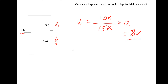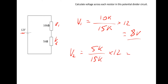For voltage two, we do the same thing: 5,000 divided by the total of 15,000, times the supply voltage of 12. That gives us the other 4 volts. This makes sense because 8 and 4 add together to give the 12-volt supply.